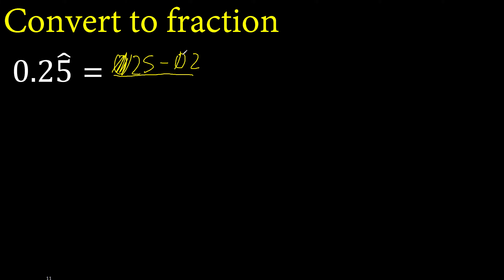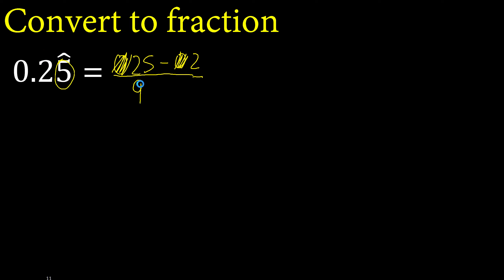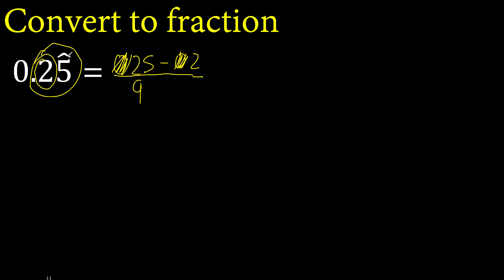Eliminate 0 on this side. After the point, there is one number under the symbol, therefore 9. One number, one time. After the point, one number outside the symbol, therefore 0. One number, 0 times.